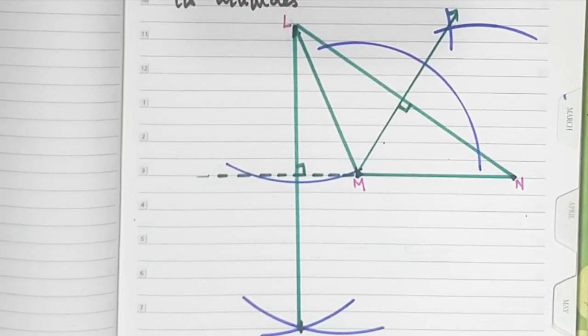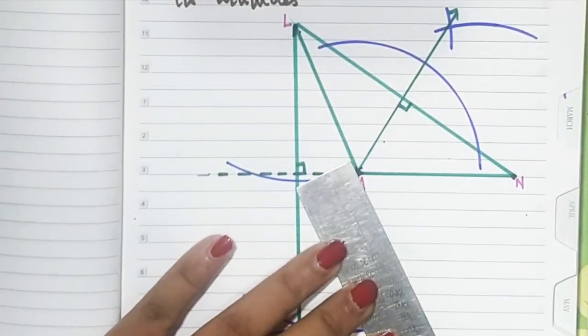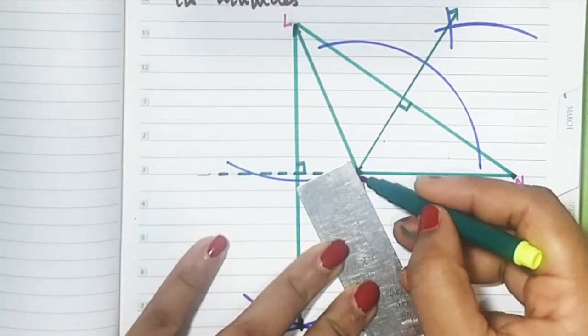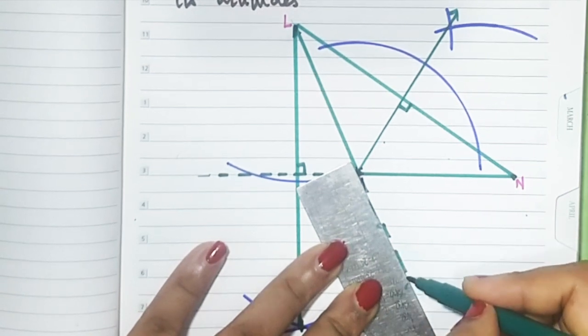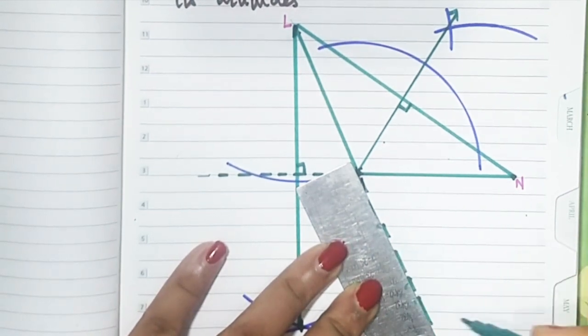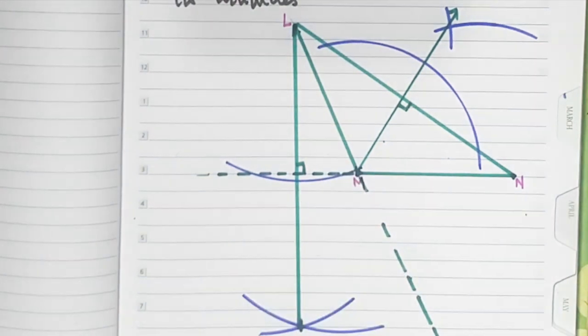Now we'll extend LM. In a similar way, we'll draw dotted lines. I think that's enough.